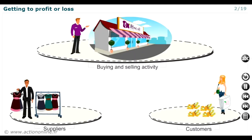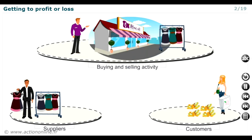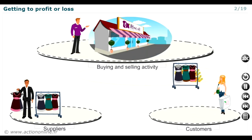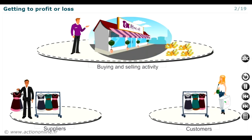Once the company has been set up, it'll pursue its economic objectives related to its core business. In our example, Bacall is a clothing sales business. Its operating cycle is as follows: the business receives garments from its supplier, then sells them to its customers in its shops. This money enables it to pay its operating expenses, and hopefully to show a profit.